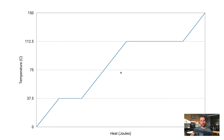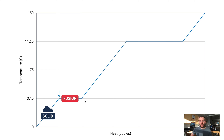In this first slanted area, the substance is in the solid phase, and the temperature is climbing from 0 to 37.5 degrees Celsius. Then it reaches a point where the temperature actually stops climbing, even though heat is still being added at a consistent rate. At this flat line, the substance is melting — in chemistry we refer to that as fusion.